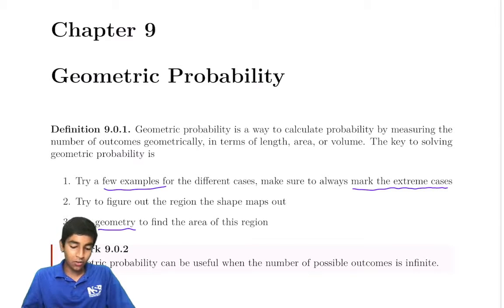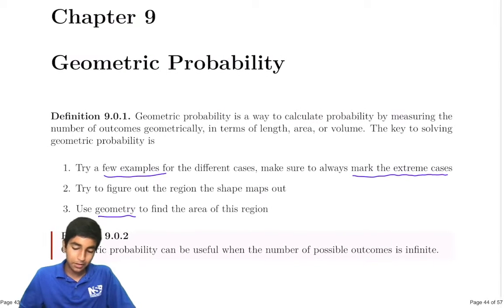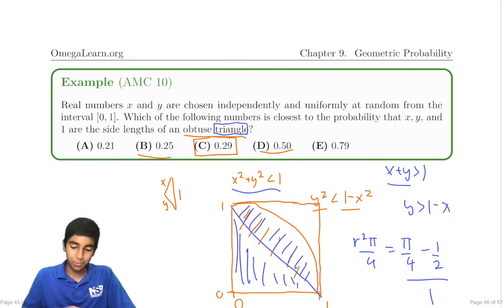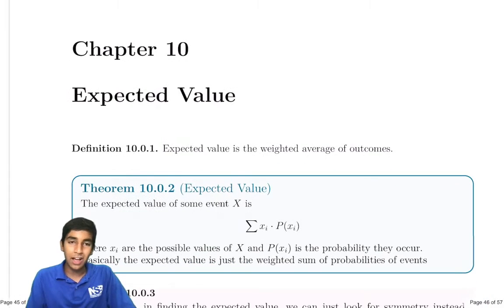Last time on Mastering AMC 10-12, we covered geometric probability and saw how it can be used to solve infinite combinatorics problems. Today we're going to talk about expected value.